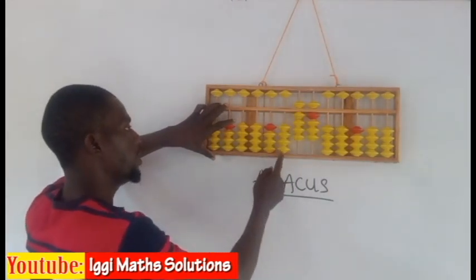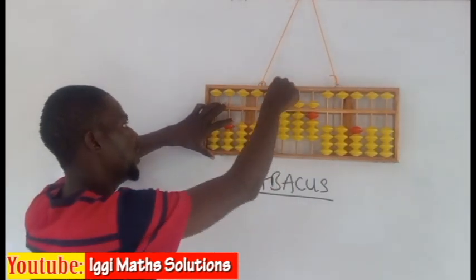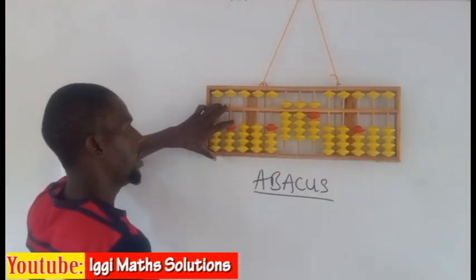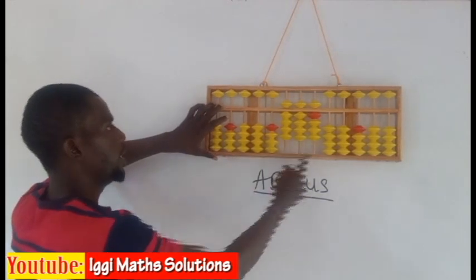Likewise here, this is 100, so we have 400, and this one is equivalent to 500, therefore we have 900.